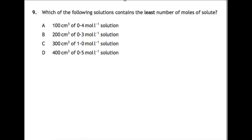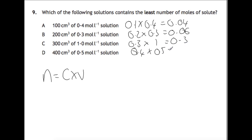Another one involving calculations here. Which of the following contains the least number of moles of solute. For this you're needing to do N equals C times V which you can find at the front of your data book. Convert the volumes into liters before you do this. So we'll have 0.1 times 0.4, 0.2 times 0.3, 0.3 times 1, and 0.4 times 0.5. Our answer here is A where we have the least number of moles at 0.04.